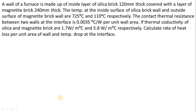Let's explain this with one example. A wall of a furnace is made up of an inside layer of silica brick, 120 mm thick, covered with a layer of magnetite brick, 240 mm thick. The temperature at the inside surface of silica and the outside surface of the magnetite brick are 725°C and 110°C respectively. The contact thermal resistance between the two walls at the interface is 0.0035°C per watt per unit area. The thermal conductivities of silica and magnetite brick are 1.7 W/m·°C and 5.8 W/m·°C respectively. Calculate the rate of heat loss per unit area of wall and the temperature drop at the interface.